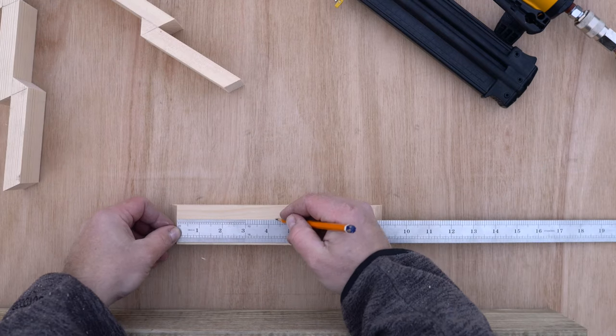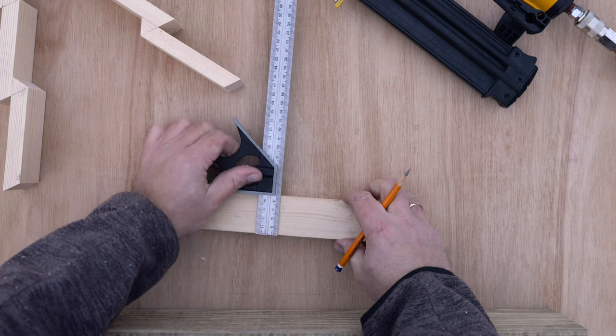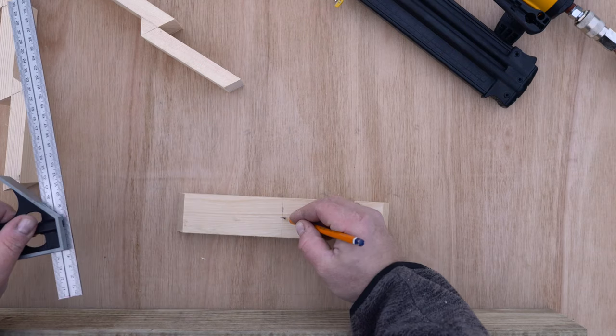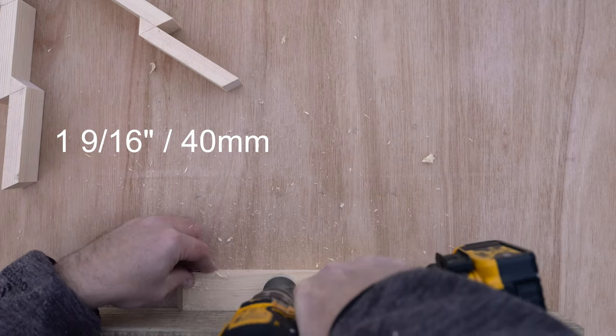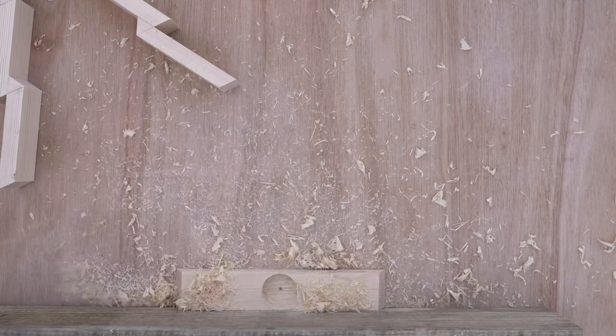Next step is optional. I am going to mark and drill out a hole for the tea light. I am using one and nine sixteenths or 40 millimeter forstner drill bit.